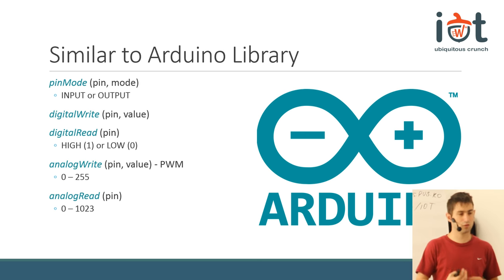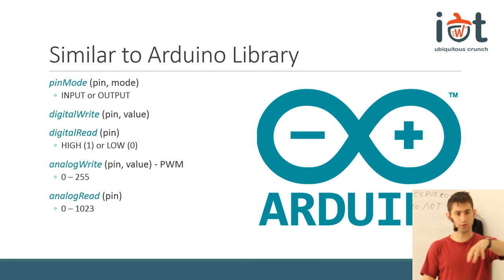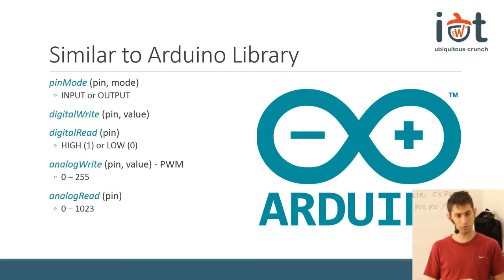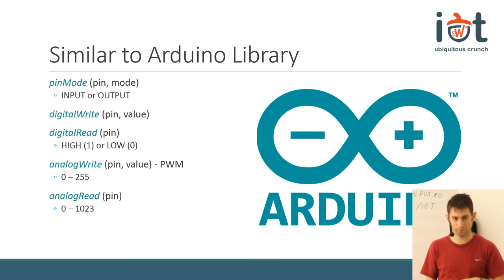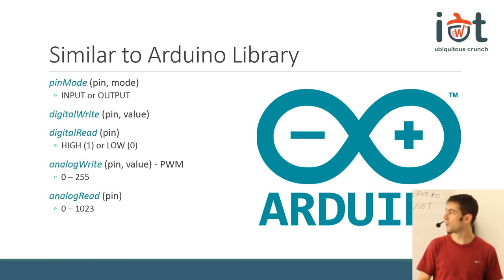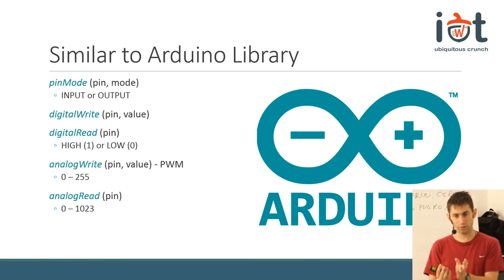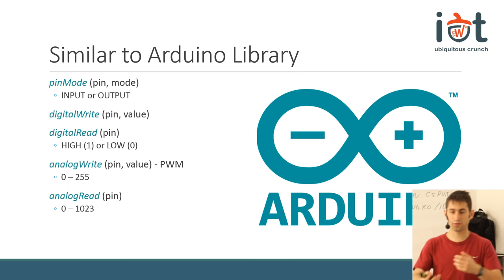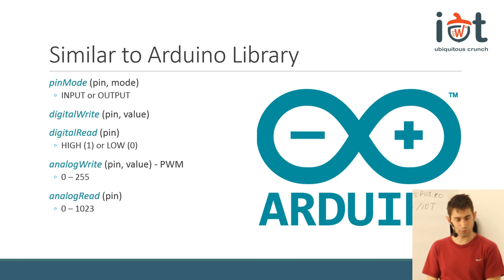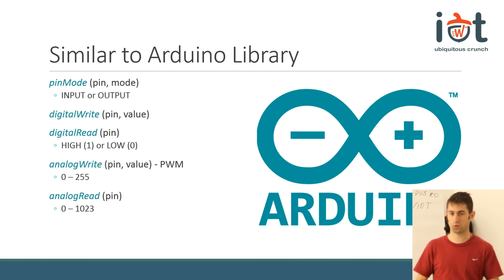Digital write takes a pin number and writes a value onto it — either zero or one, or you can use the macros low and high. Digital read takes a pin and returns the value that it samples on the pin, returning either one or zero.